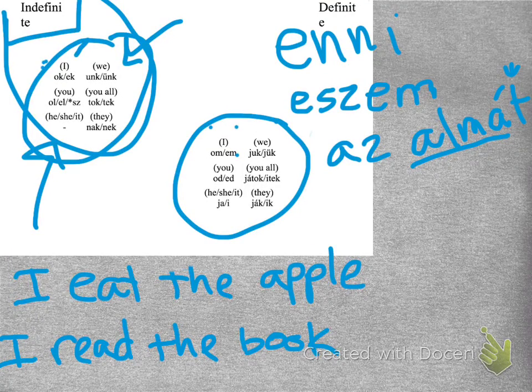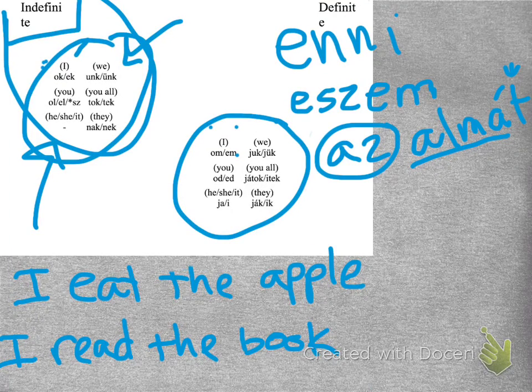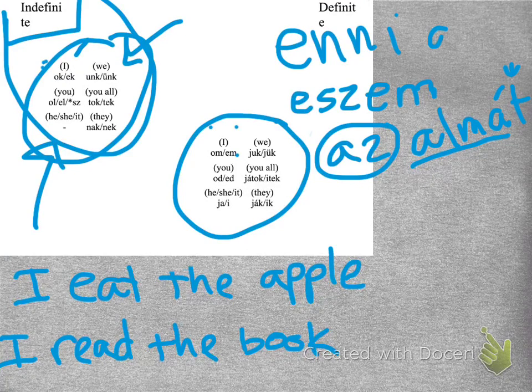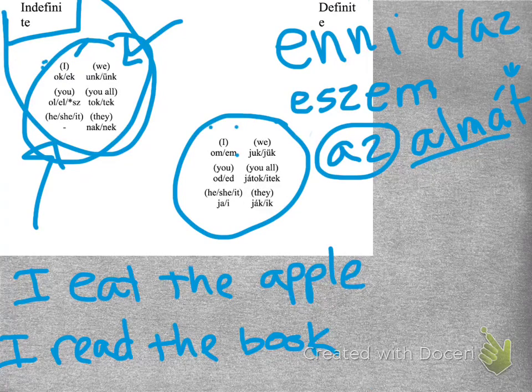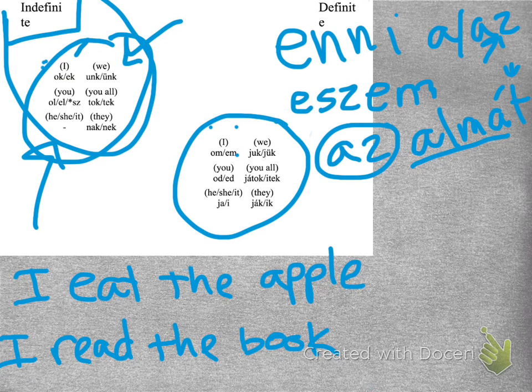The can either be a or az. The reason why you see az sometimes is because if the next word after the The starts with the vowel, just like this one, they throw the az right here, just like a-an in English, they do the same thing with the a-az with Hungarian. So eszem az almát.